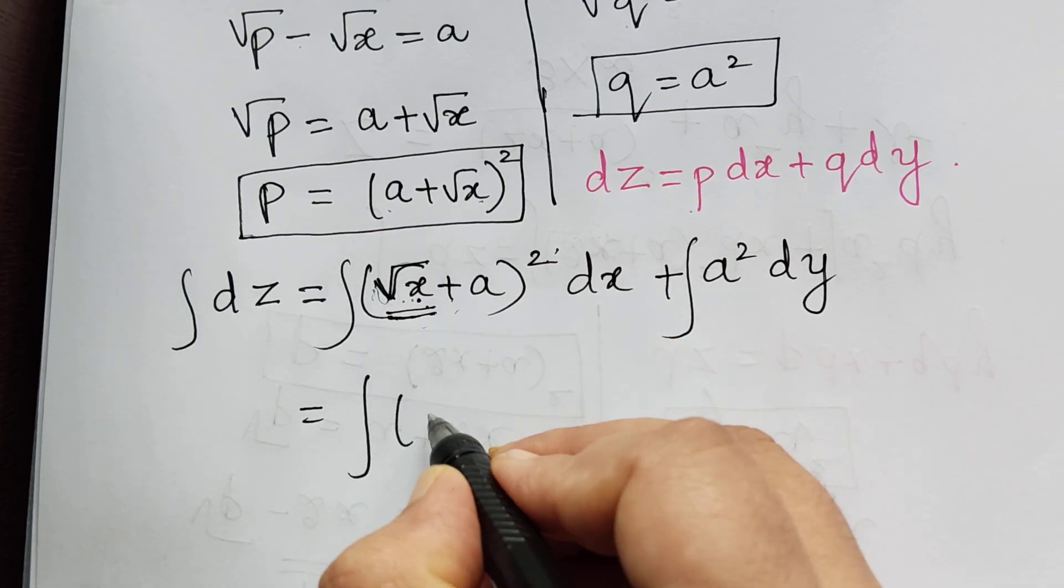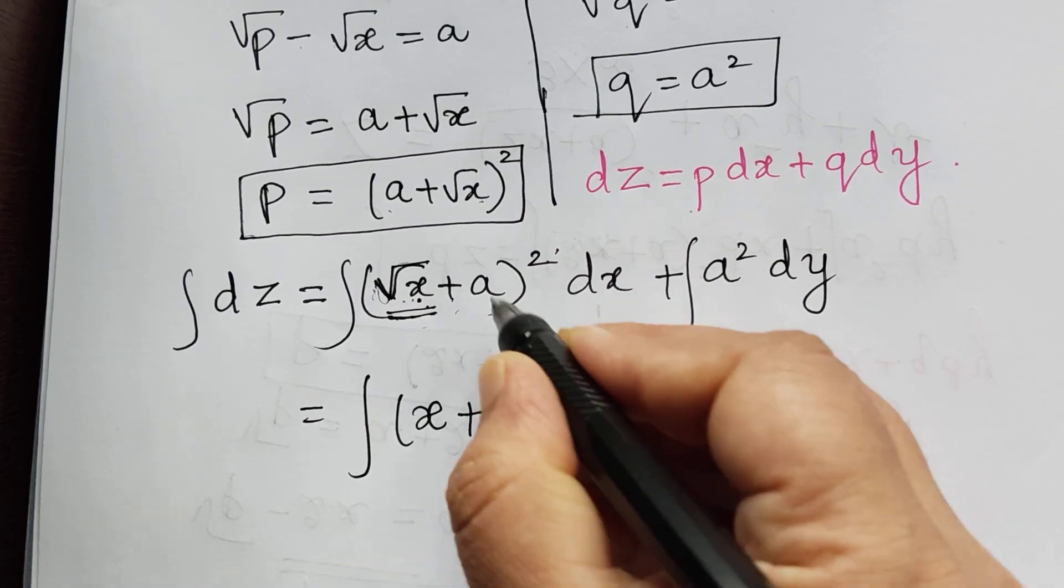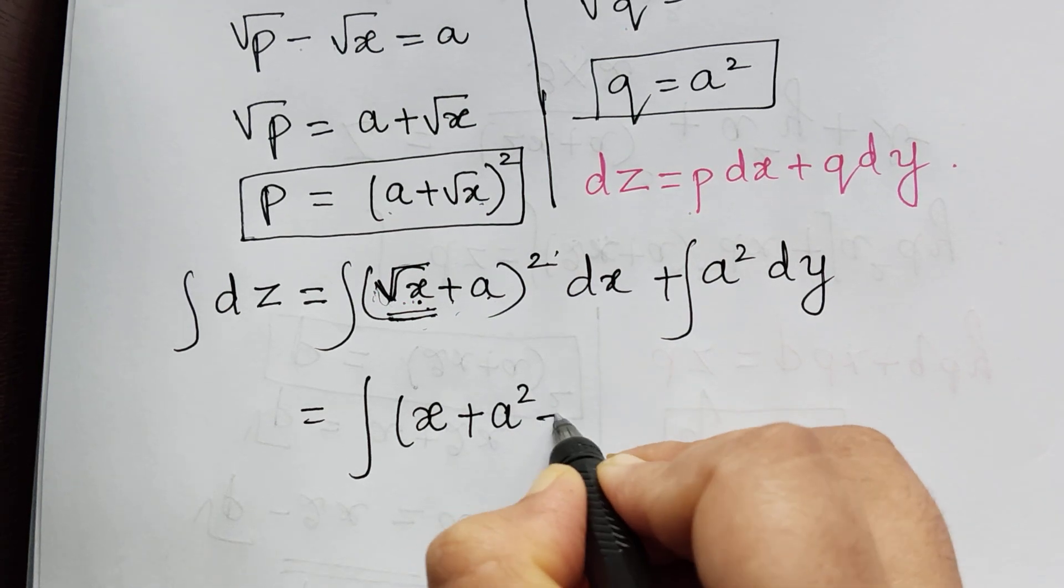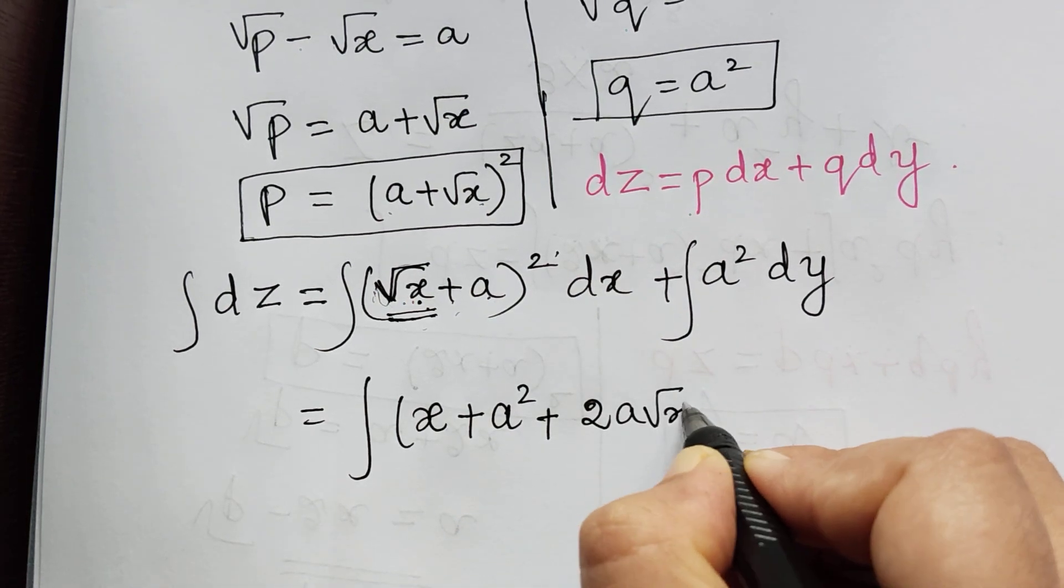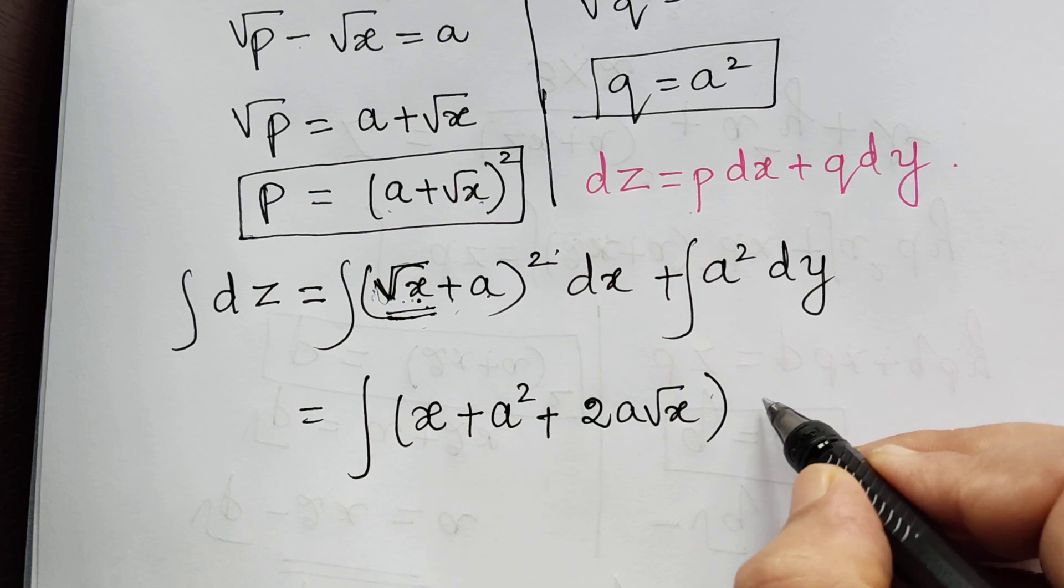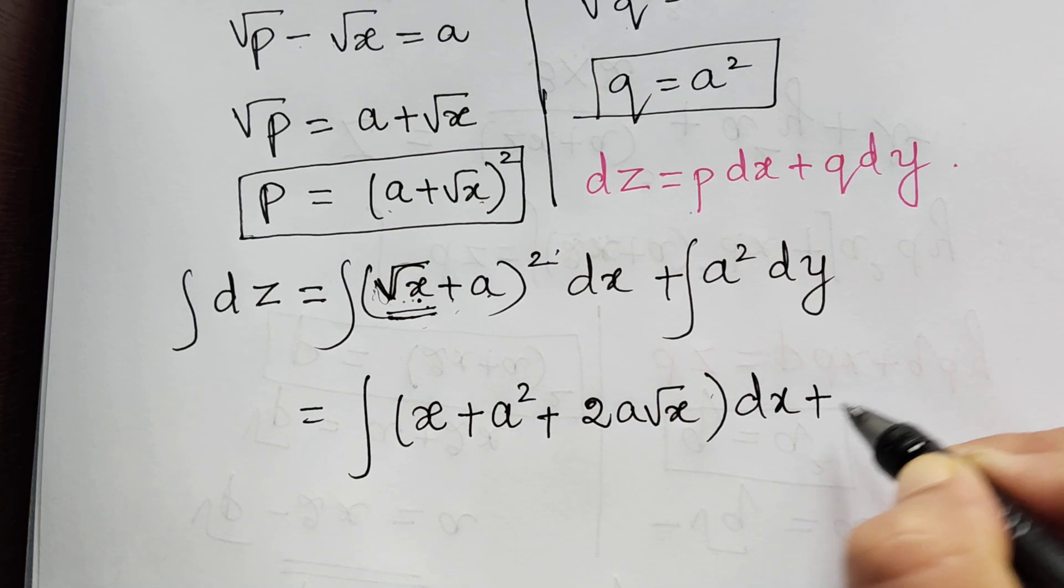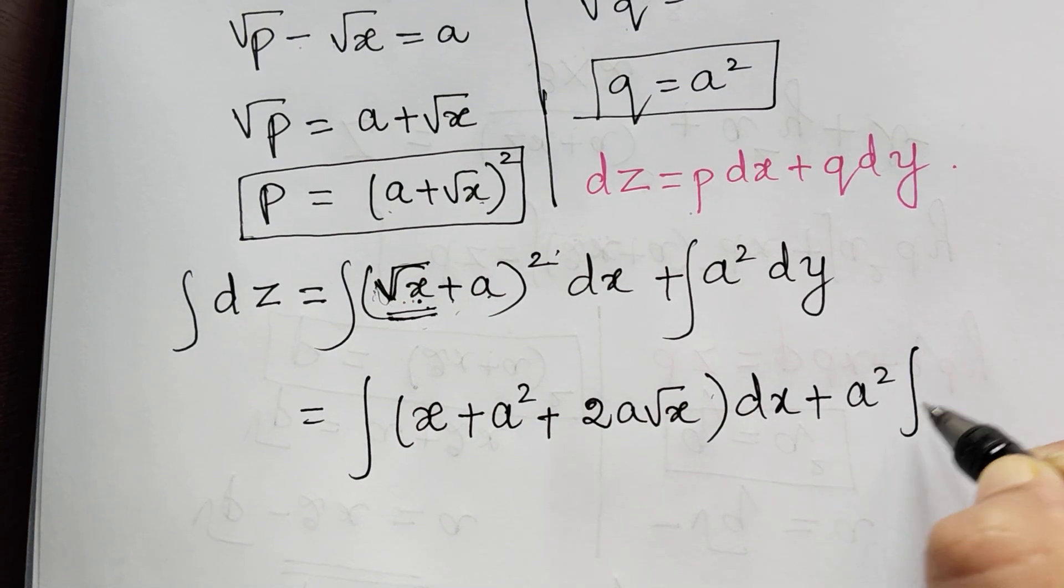square of root x is x plus a square plus 2ab. So 2a root x. Plus dx plus a square is a constant integral dy.